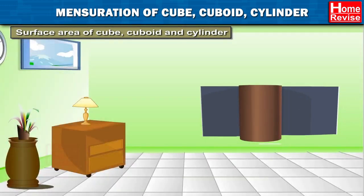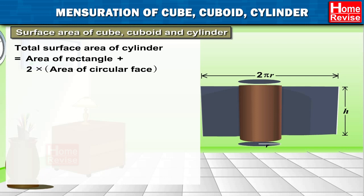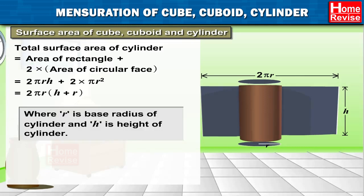Now, if we open a cylinder, the total surface area of the cylinder equals the area of the rectangle plus 2 times the area of the circular face, which is 2πRH + 2πR², equal to 2πR(H + R), where R is the base radius and H is the height of the cylinder.